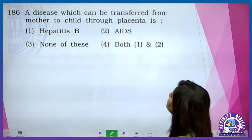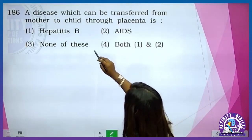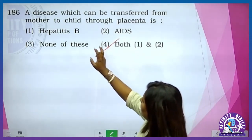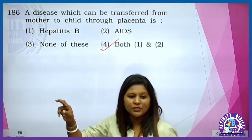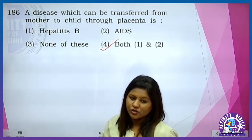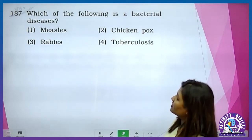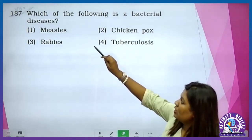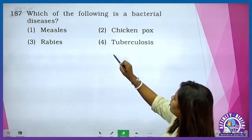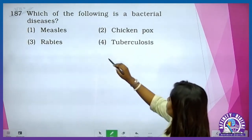Disease which can be transferred from mother to child through placenta is both hepatitis B and AIDS. They are not only transmitted sexually but there are other modes of transmission — one such is through placenta. The next question: which of the following is a bacterial disease? Others are viral diseases — tuberculosis is caused by Mycobacterium tuberculosis, so answer is tuberculosis.